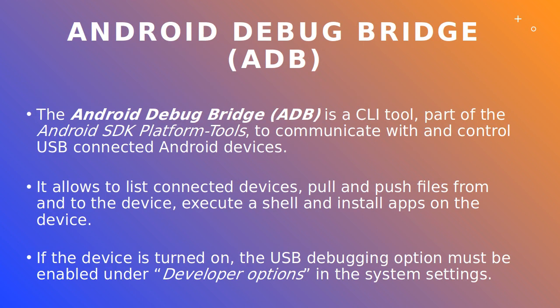In this video we assume that the device we are going to image is already rooted, and therefore we have full access to its storage. To communicate with, access and control an Android device connected to a USB port of our forensic workstation, a very useful command line tool is the Android Debug Bridge, which is part of the Android software development kit and comes pre-installed on Kali Linux. The Android Debug Bridge allows us, among others, to list devices connected to our computer, pull and push files from and to the device, execute a shell, and install applications on the device.